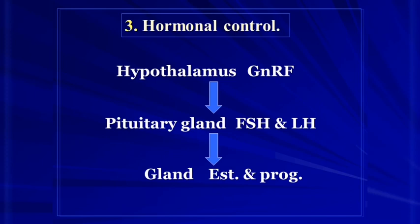In terms of hormone control: the hypothalamus secretes gonadotrophin-releasing hormone, which acts on the anterior pituitary gland. The pituitary secretes follicle-stimulating hormone (FSH), which drives growth of the ovarian follicle and stimulates estrogen production, leading to the proliferative phase of the endometrium. After final maturation of the follicle, luteinizing hormone (LH) triggers ovulation, rupturing the Graafian follicle and releasing the oocyte.